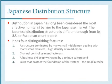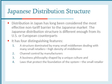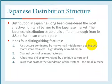Regarding the Japanese distribution structure — the density of middlemen, retailers, and wholesalers in the Japanese market is unparalleled in any Western industrialized country. Distribution in Japan has long been considered the most effective non-tariff barrier to the Japanese market. The Japanese distribution structure is different enough from its US and European counterparts. There are four distinguishing features: a structure dominated by many small middlemen dealing with many small retailers; a channel controlled by manufacturers; a business philosophy shaped by a unique culture; and laws that protect the foundation of the system.